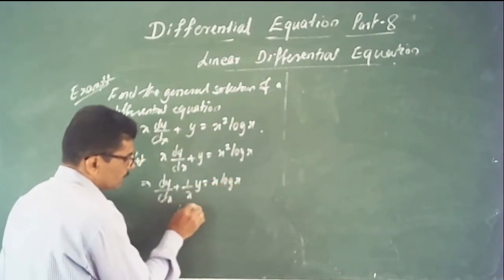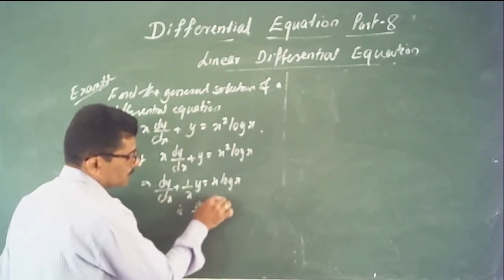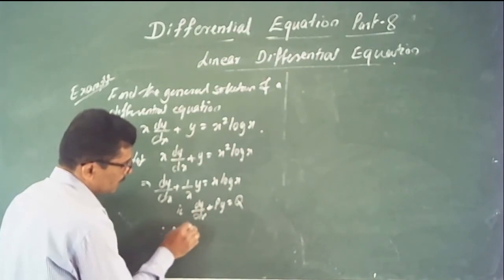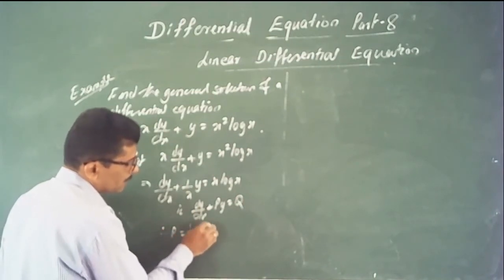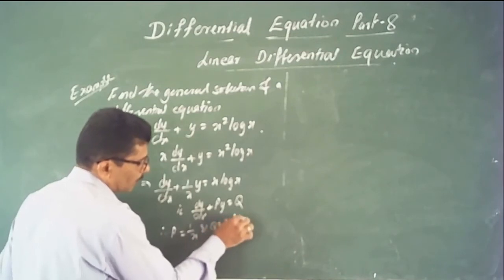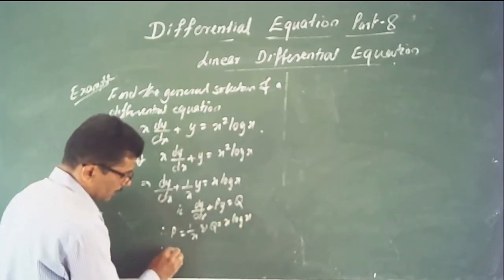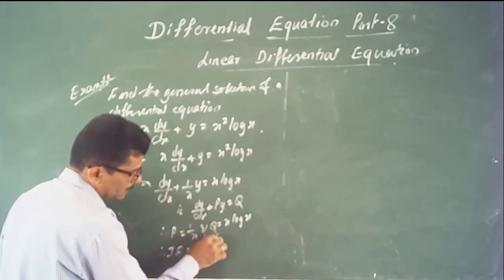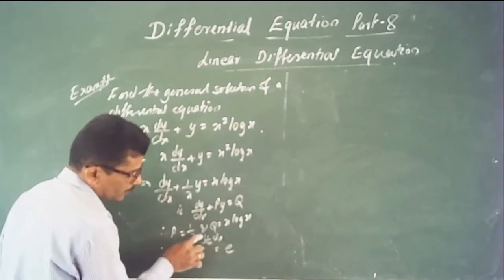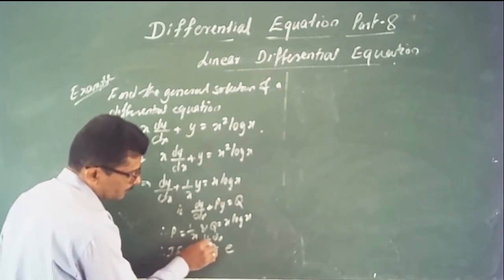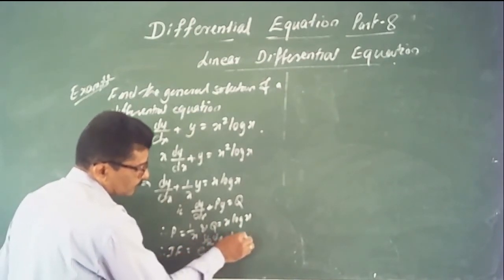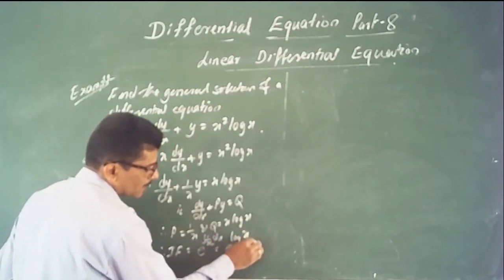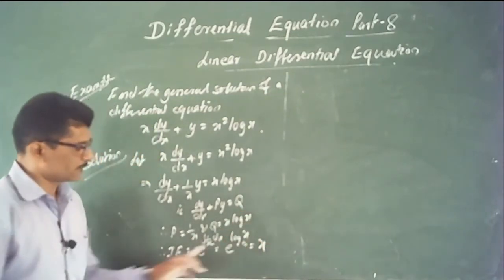This is in the form dy/dx + P·y = Q. Therefore P = 1/x and Q = x·log x. The integrating factor is e^(∫(1/x) dx) = e^(log x) = x.